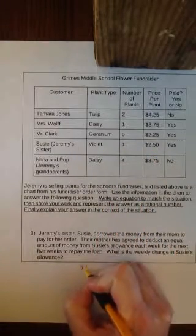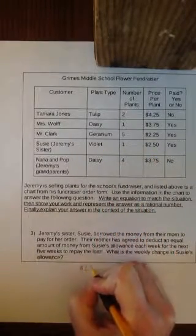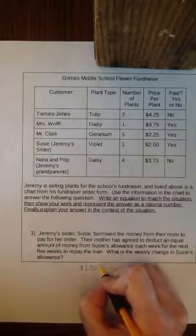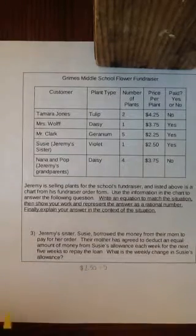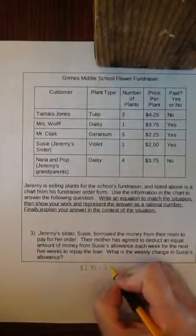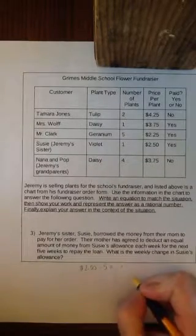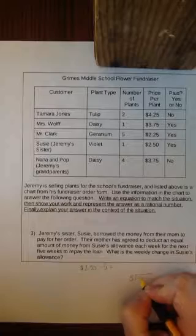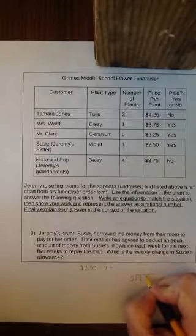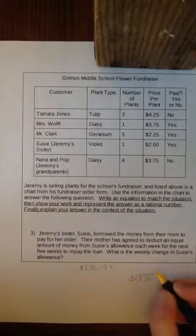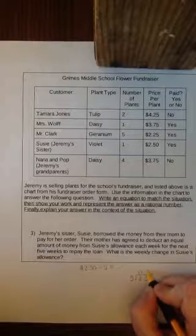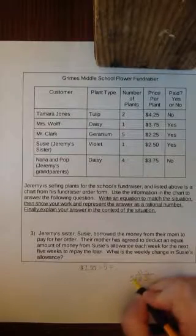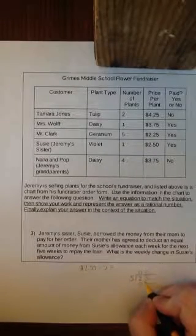I take my total, $2.50, and divide it into the five weeks that the mom is going to allow her to repay. I'll make a division problem. Five does not go into two, but five goes into 25 five times — five times five is 25.